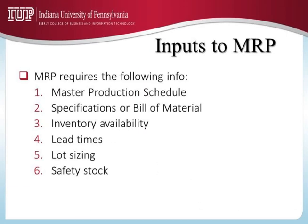We have already discussed the six inputs to MRP: the MPS, the bill of materials, the inventory availability or the inventory status, the lead times for each of the components, raw materials, sub-assemblies, final assembly, lot sizing, and safety stock if any. Once we have the six inputs to MRP, now we need to see how the math in the MRP system works.